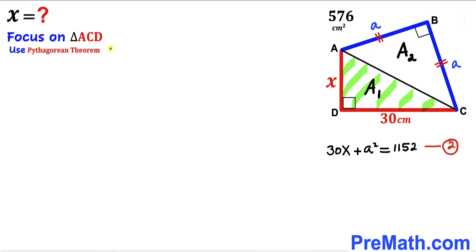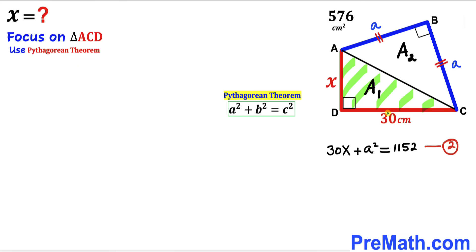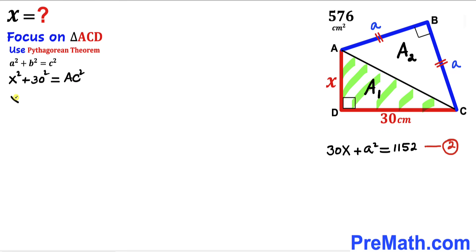Now let's focus on triangle ACD and apply the Pythagorean theorem: a squared plus b squared equals c squared. Here, the hypotenuse is side AC and the two legs are 30 and x. Substituting: x squared plus 30 squared equals AC squared, which simplifies to x squared plus 900 equals AC squared. We label this as equation 3.